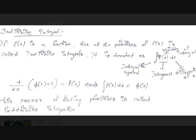This symbol is called the integral symbol. f(x) is called the integrand — the function whose integral we are calculating. The variable x is called the variable of integration. dx means the differential of x; it is not with respect to anything specific, it is just the differential of x. Now, if d/dx of [φ(x) + c] is f(x), then ∫f(x) dx = φ(x) + c.